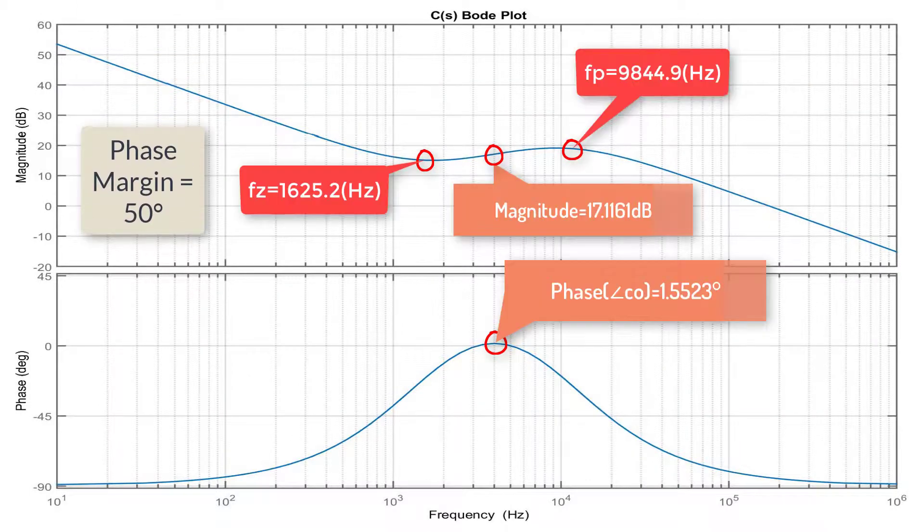With a phase margin of 50 degrees, the required controller features a crossover magnitude of 17 dB, a crossover phase of 1.5 degrees, a median zero frequency of 1600 Hz, and a median pole frequency of 9800 Hz.